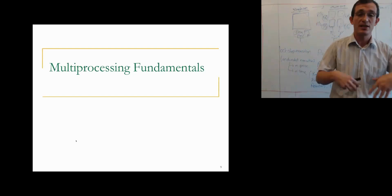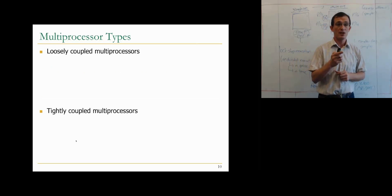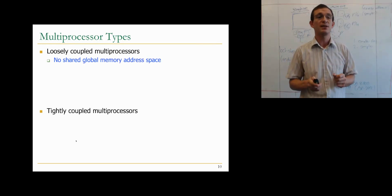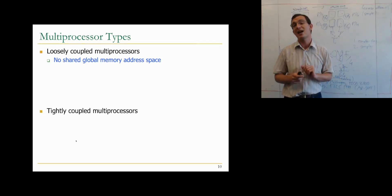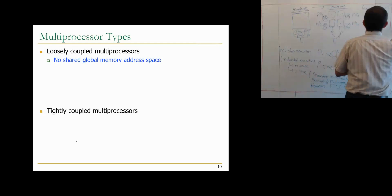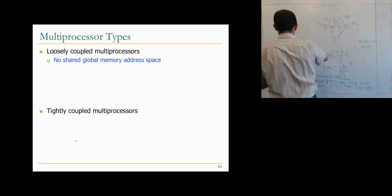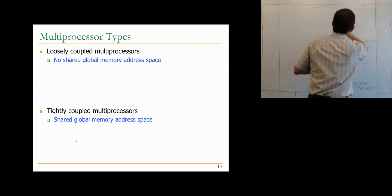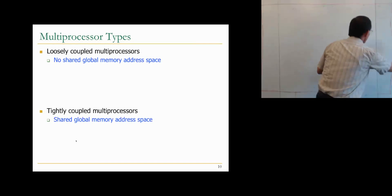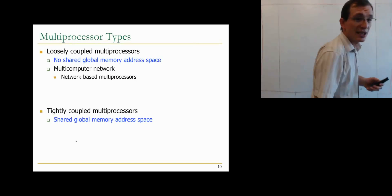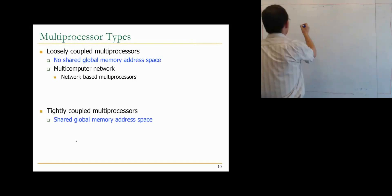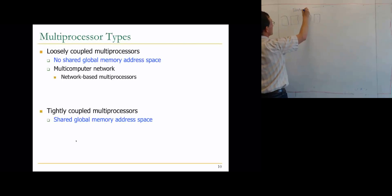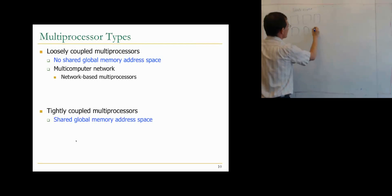Let's go into multiprocessing fundamentals. There are two multiprocessor types: loosely coupled and tightly coupled. The key distinction is the existence or lack of a shared global memory address space. In a loosely coupled multiprocessor, there is no shared global memory address space — each processor has its own private memory, address space 0 through M-1, and one processor cannot directly reference another's memory.